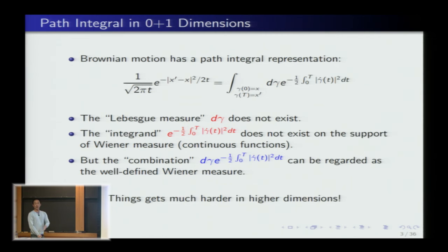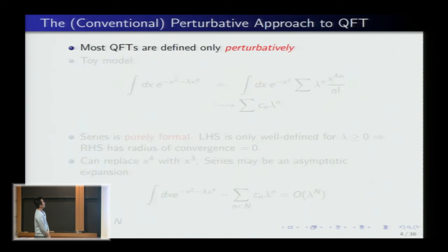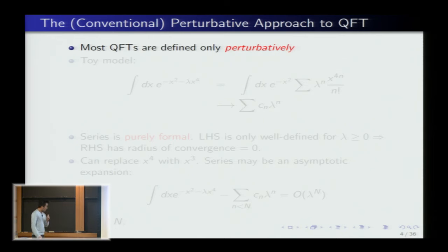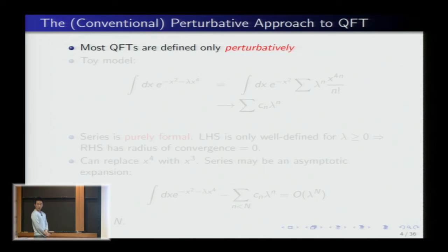Naturally, things get harder as we go higher up in dimension. Since we can't make sense of path integrals in general, what is the conventional approach? It's to do perturbation theory — formal perturbation theory. That's how most quantum field theories are approached; it's often the only approach we have.